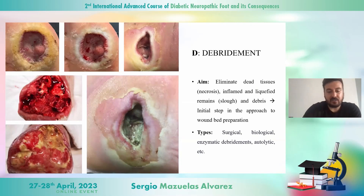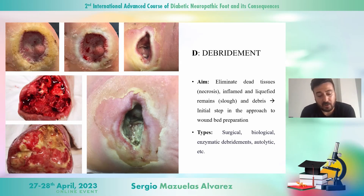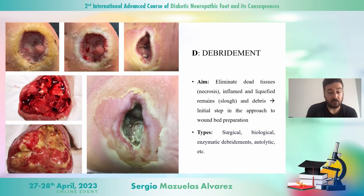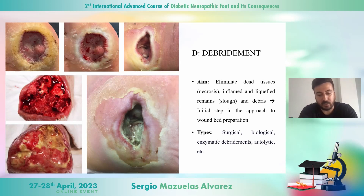First of all, the aim of debridement is eliminating devitalized tissues, inflammation, and liquefied remains. This is the initial step in the approach to prepare the wound bed. There are different types of debridement — for example, surgical, biological, enzymatic, autolytic, and other types. As you can see in these pictures, there is a big difference between the wound before debridement and after.